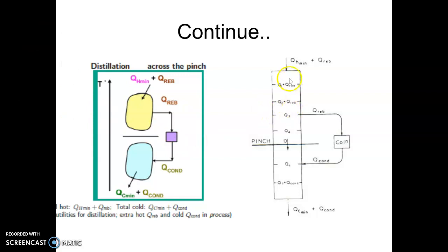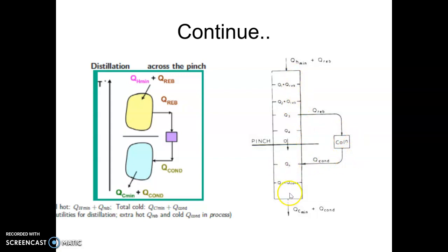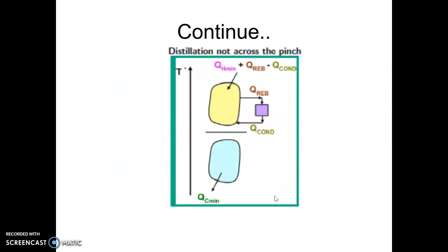This is shown here with various intervals. Since we require to pass on the energy, from this point we remove Q reboiler energy. To maintain the energy balance, we have added Q reboiler amount here, and similarly we add Q condenser here — so from this point onward we have Q condenser adding. Therefore, placing the column across the pinch will not help the cause of saving energy.